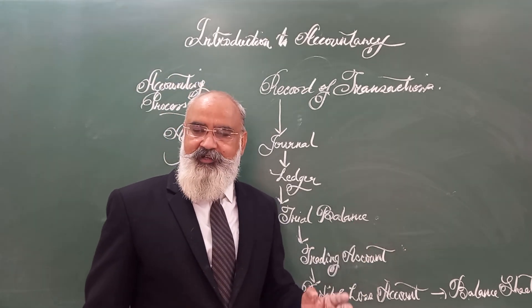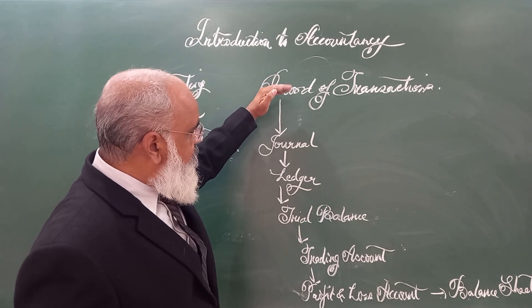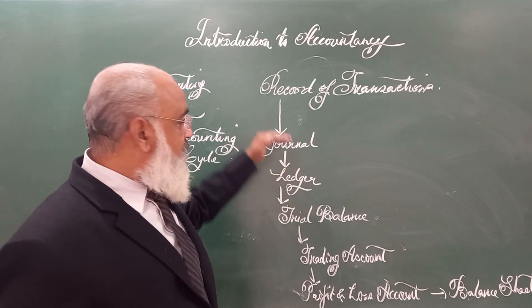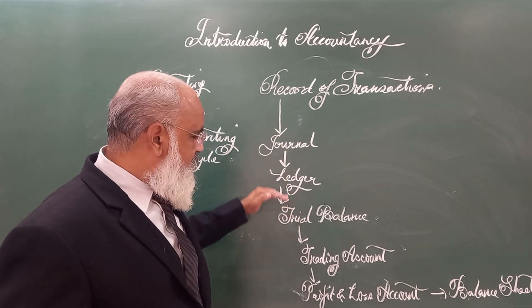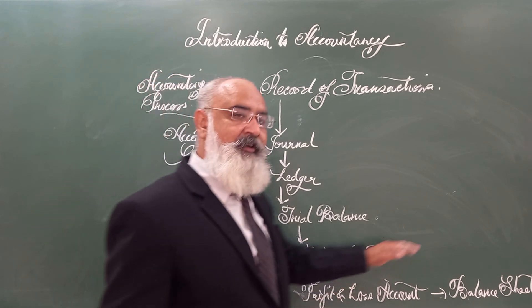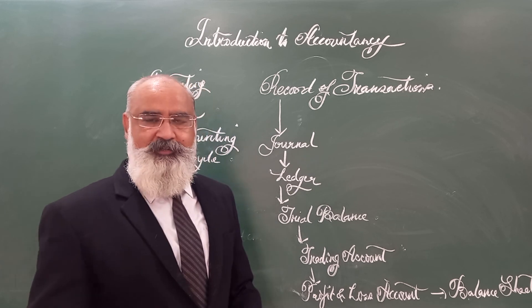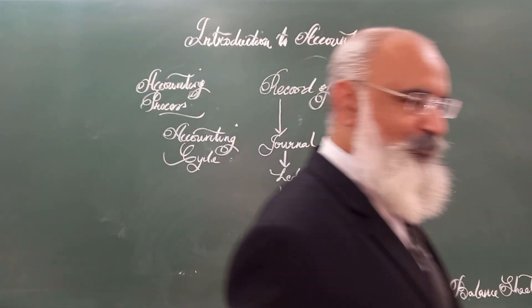In today's class, what we learned is that accountancy is a series of processes. It begins with record of transaction, journal, ledger, trial balance, trading, P&L, balance sheet. It's enough for today's class. Thank you all of you.